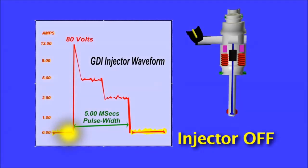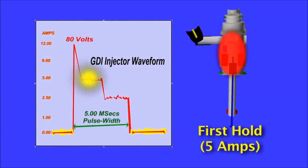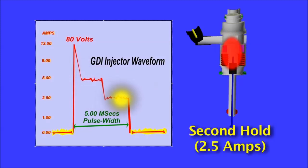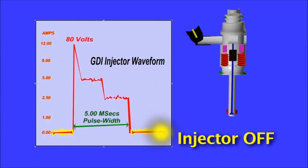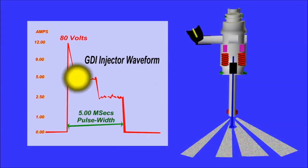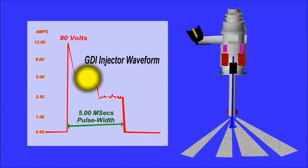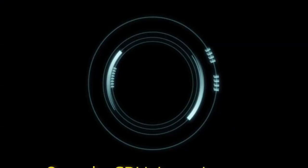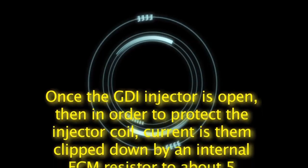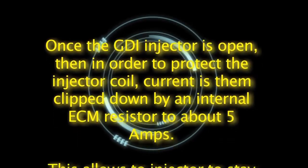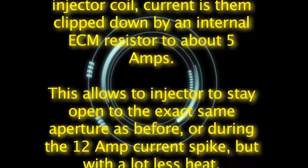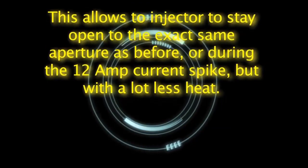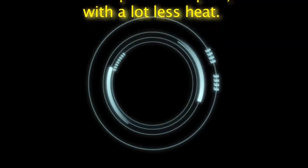Two is the first stage of the hold current. The idea behind peak and hold is to supply a high current to quickly activate or open the injector needle. Being that GDI fuel pressures are a lot higher, you need a lot more current to pry open a GDI injector — hence the high 12-amp value. Once the GDI injector is open, in order to protect the injector coil, current is then clipped down by an internal ECM resistor to about 5 amps. This allows the injector to stay open to the exact same aperture but with a lot less heat.